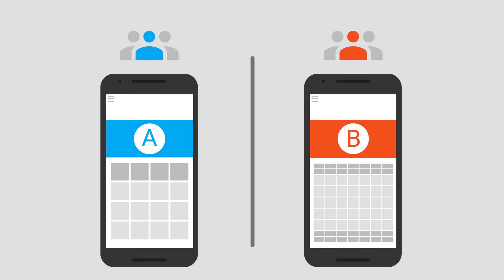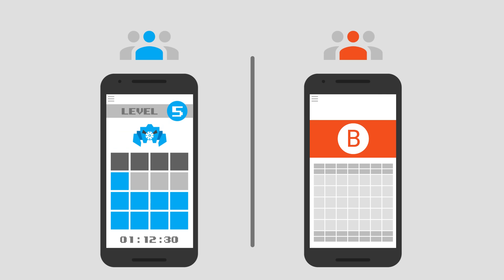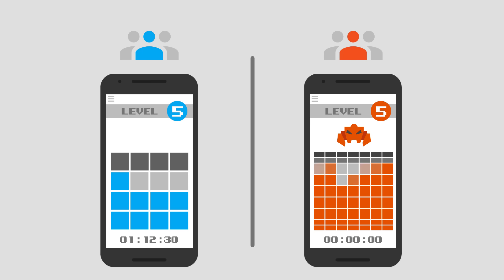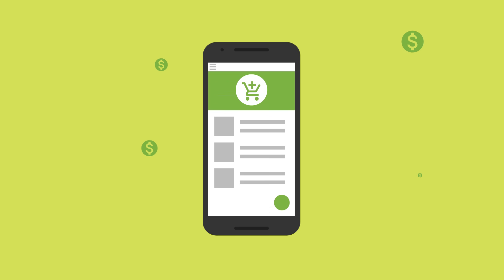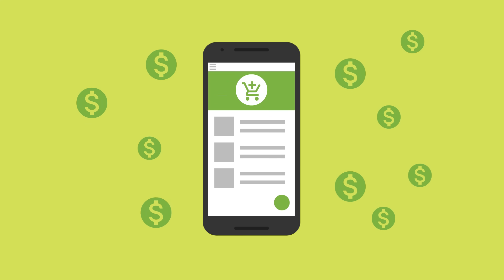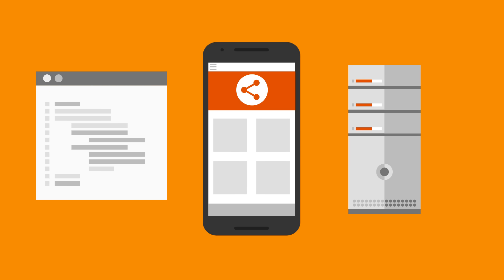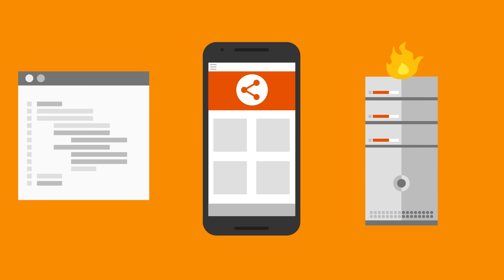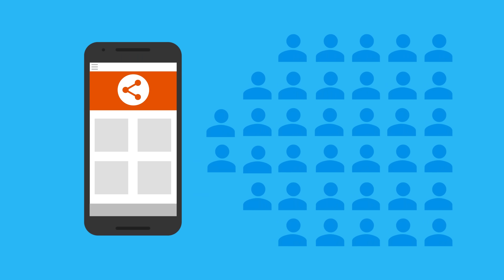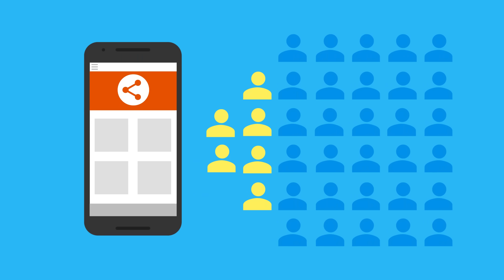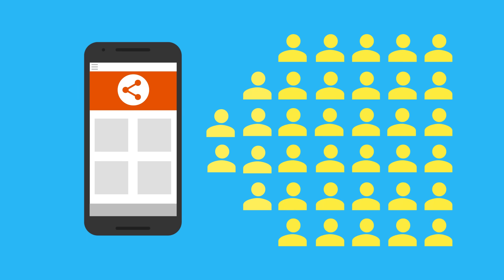Sounds like you need an A/B test. That's where Remote Config's audience segmentation feature comes in. This allows you to deliver different configurations to different groups of users simultaneously. So you can try out your new level settings with half your users while keeping the old settings with the other half. Audience segmentation isn't just great for A/B testing — you can use Firebase Remote Config to gradually roll out changes, trying them first with a small percentage of your users before pushing them out to your entire audience.